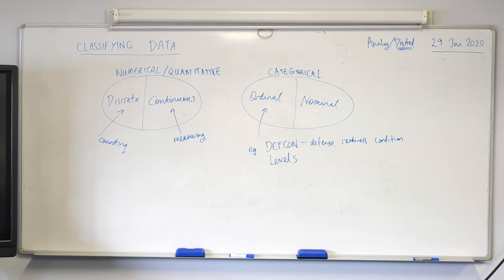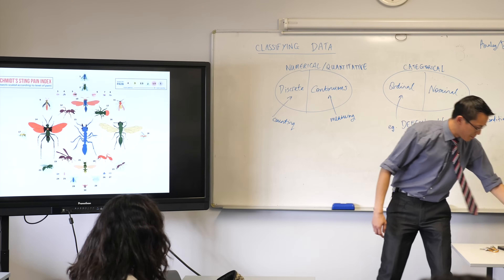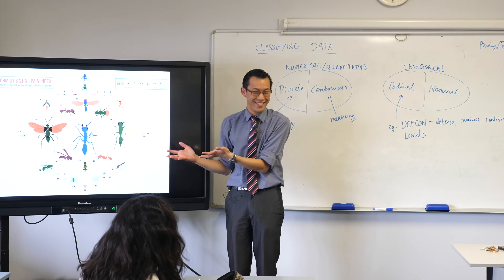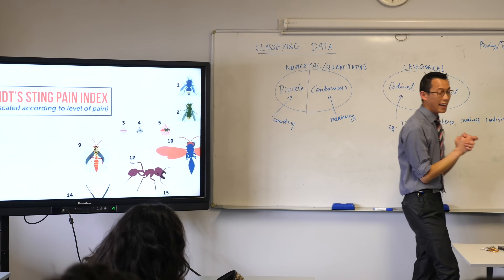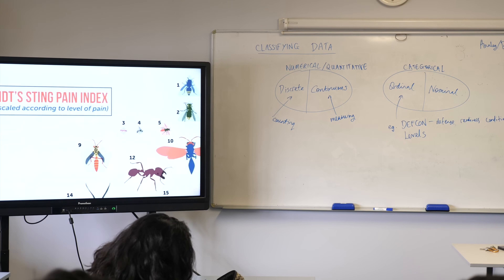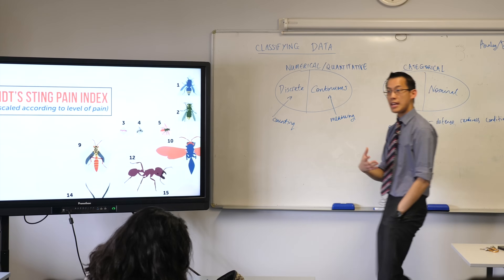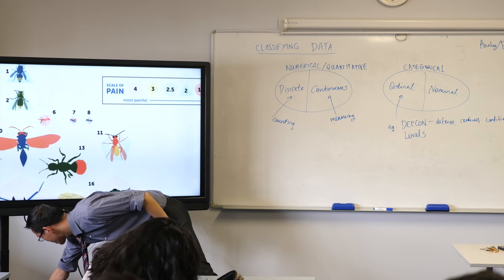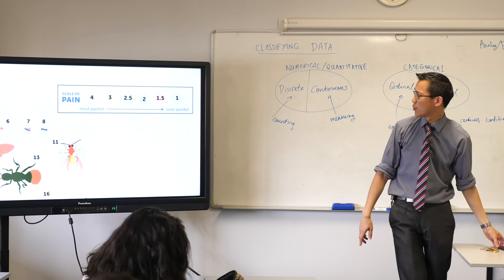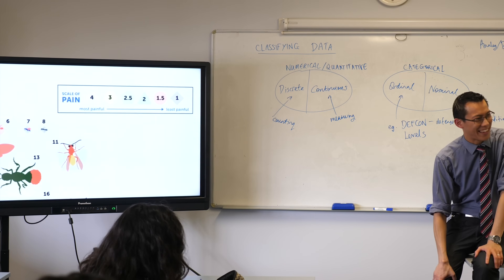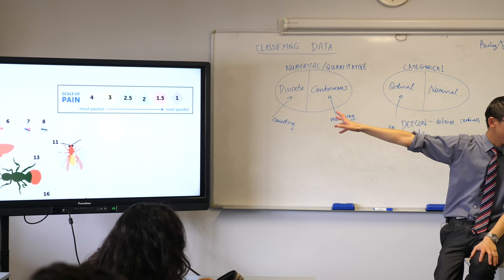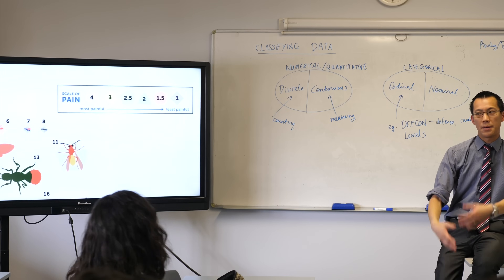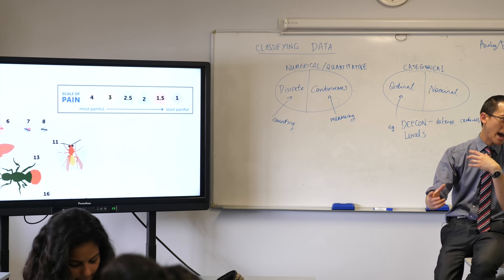I have one other favorite example. This is the Schmidt pain index. You can see why it's ordinal - it's a scale of pain from most painful to least painful. The important thing is that these don't represent numbers that you can add or subtract. The red fire ant is a 1.5. At the most painful end - a 4 - is the bullet ant. Let me read the description: 'Pure, intense, brilliant pain like walking over flaming charcoal with a three-inch nail embedded in your heel.'